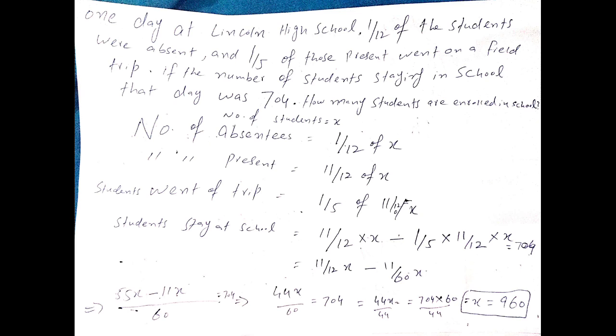Last question is very important. One day at Lincoln High School, 1/12 of the students were absent and 1/5 of those present went on a field trip. If the number of students staying in the school that day was 704, how many students are enrolled in the school? This means 1/12 of the students were absent, so the number present is 11/12 of the students.